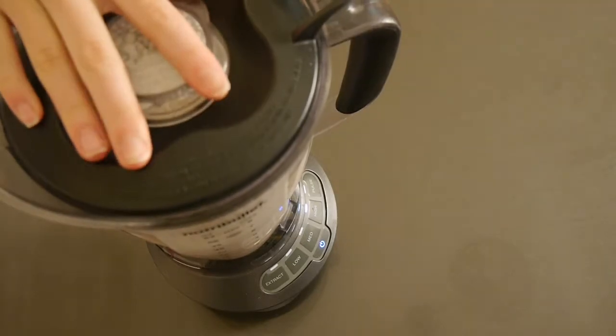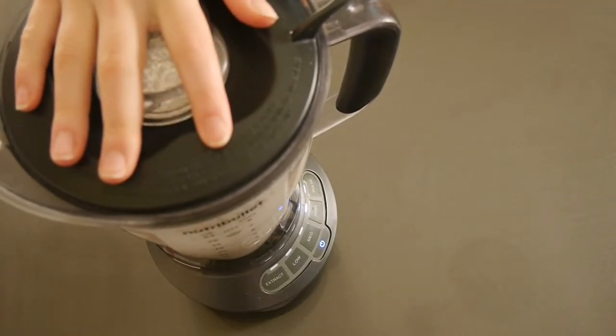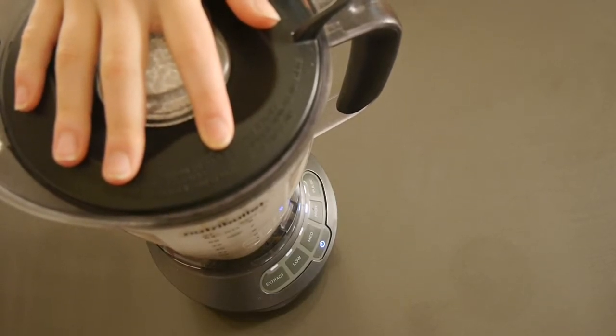Basically the coconut cream is kind of a beige color but when it mixes with the sugar and the air, kind of whipping it, it turns more of a white color. So that's just something to note.